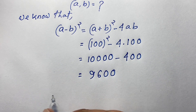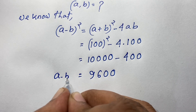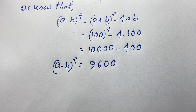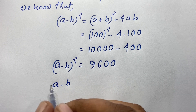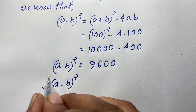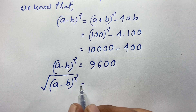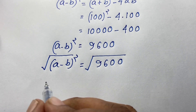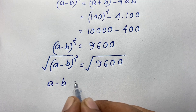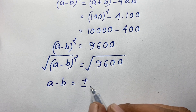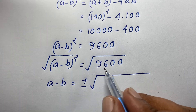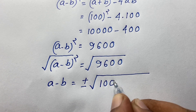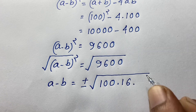So we find that a minus b whole squared equals 9,600. Now I take square roots on both sides, cancelling the square and square root. So a minus b equals plus or minus square root of 9,600. I can write 9,600 as 100 times 96, and 96 is 16 times 6.